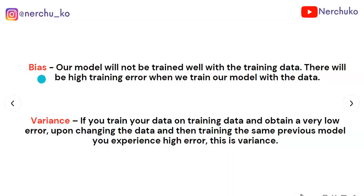First, bias. When our model is not trained well with the training data, there will be a high training error. If we train our model with the training data, we get a train error — this is bias.